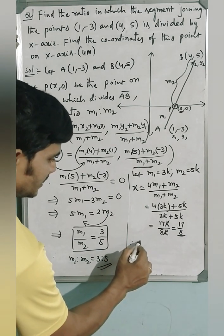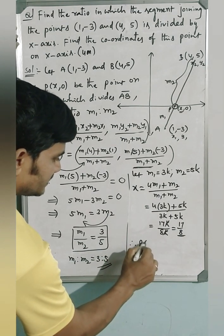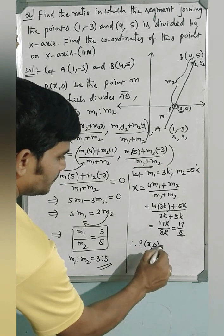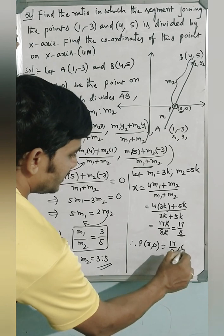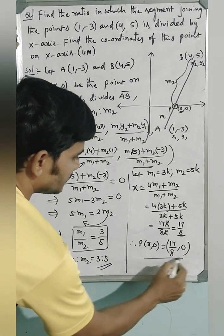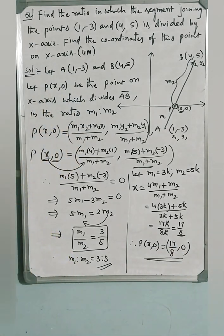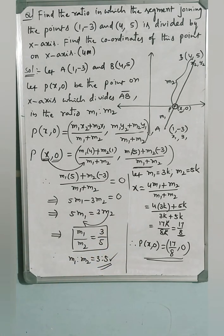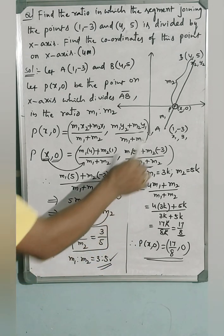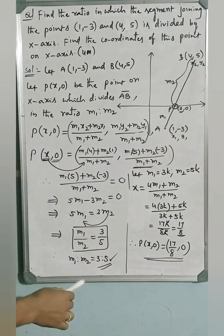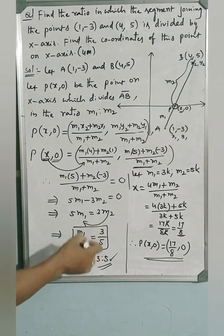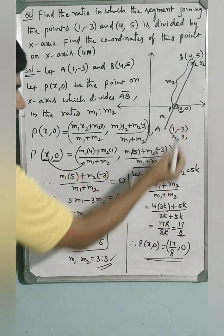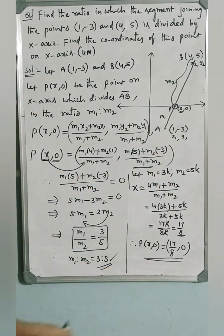Therefore the point P(x, 0) would be equal to (17/8, 0). This is how we find the ratio in which the point divides the given segment joining the two points A and B, and the coordinates of the corresponding point.